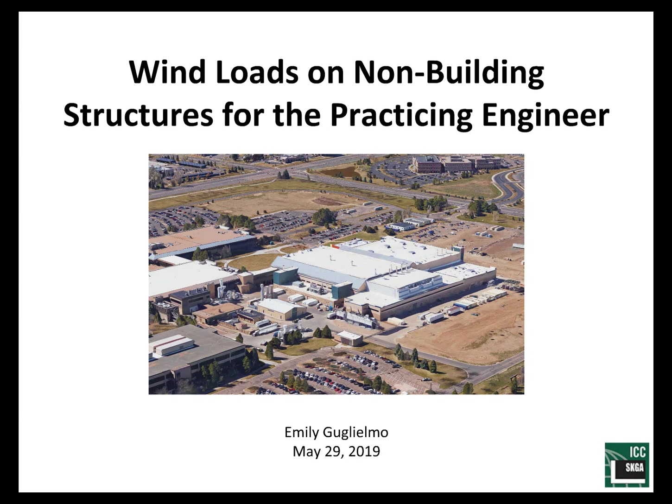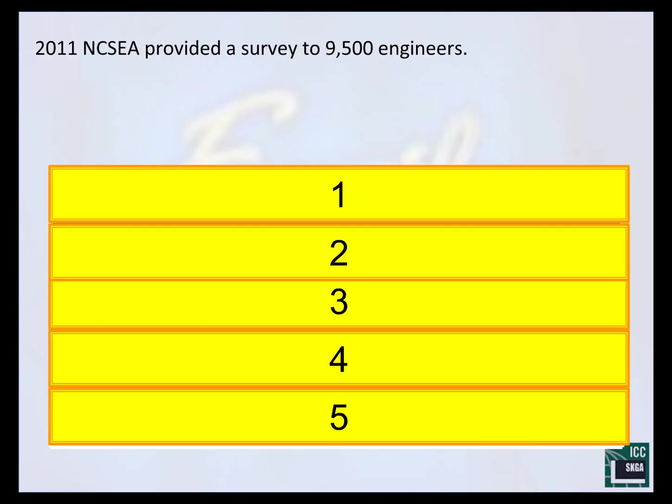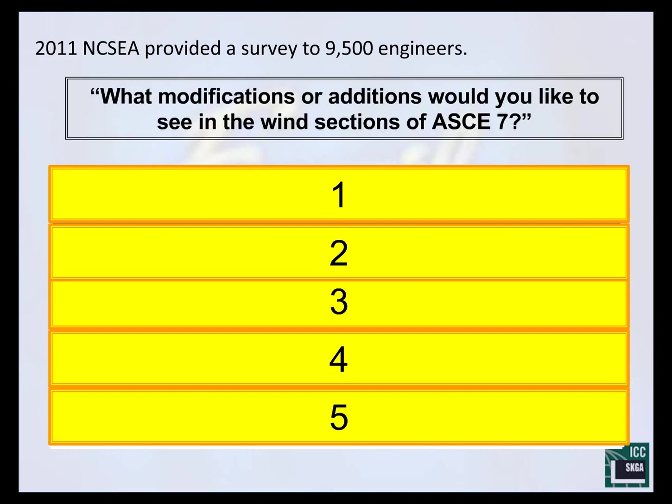Today we're going to focus on those elements — wind loads and how to deal with non-building structures. I work with the NCSEA Wind Engineering Committee, and as part of that committee we have really focused on advocating for the practicing engineer. We have done a handful of surveys. The survey I'm going to show you is a little bit outdated, but it allows me to give you a full cycle so you can see the impacts of this study. A more recent study was done last year, and we're halfway through that cycle. In this 2011 survey, NCSEA sent it out to about 10,000 engineers with a handful of questions. I want to focus on the question: what modifications or additions would you like to see in the wind sections of ASCE 7?